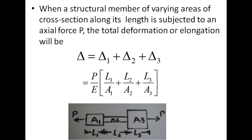The total elongation delta is equivalent to the sum of the deformations of individual sections under the action of axial force P. So delta equals delta1 plus delta2 plus delta3, which equals P by E times (L1/A1 + L2/A2 + L3/A3). This formula is applicable for a bar of varying section subjected to axial force at the ends only.